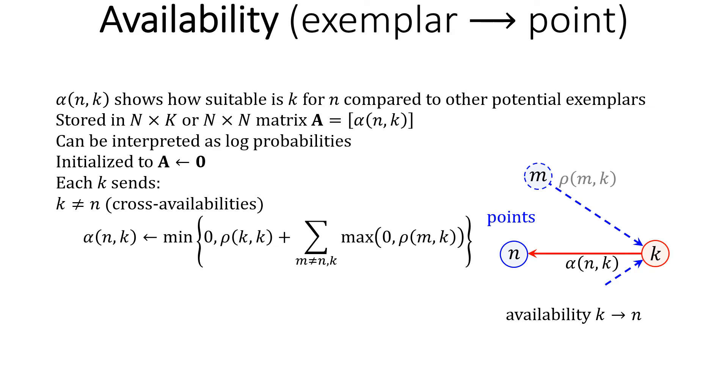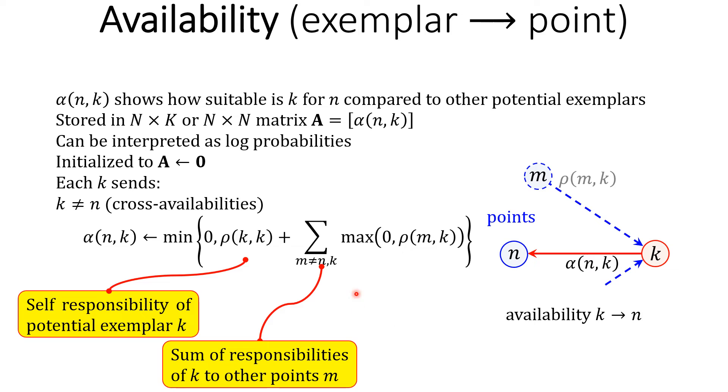To obtain the cross-availability alpha_nk sent by k to n, we first take the self-responsibility of potential exemplar k and to it we add the sum of responsibilities to k.